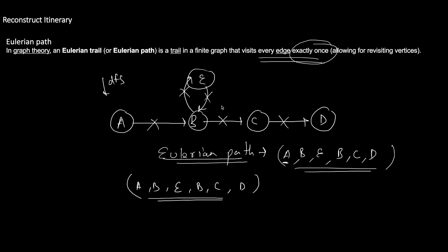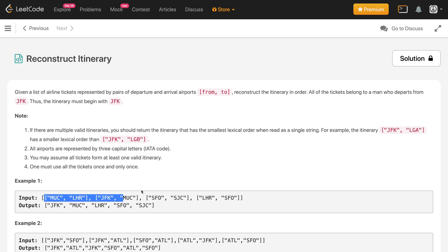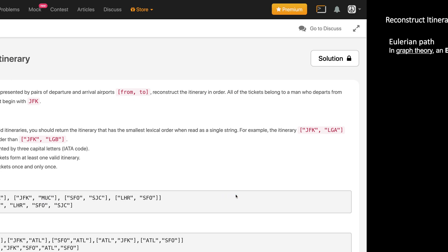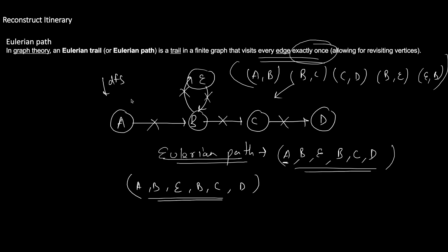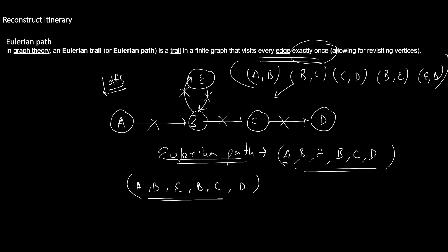In the question you are not given a graph directly — you are given a list of pairs such as A→B, B→C, C→D, B→E, E→B. From this list you have to create the graph. So the first step is to convert this list of pairs into an adjacency structure, and then run DFS from JFK to find the Eulerian path.